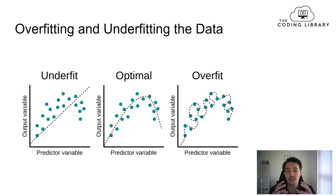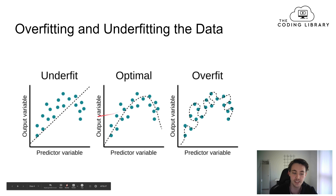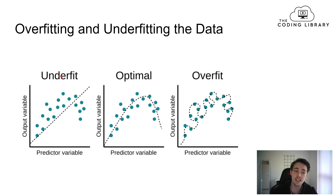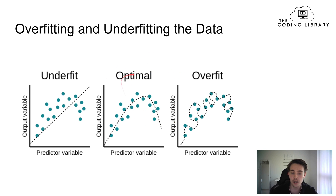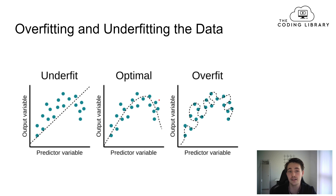Let's look at what overfitting and underfitting really mean visually. On this plot, the x-axis is the predictive variable and the y-axis is the output variable we want to predict. If our model is underfitting, it's not complex enough to predict new data — think of a straight line like linear regression that is far from the actual data points. The optimal solution is a regression curve that passes close to all the points and can still generalize.